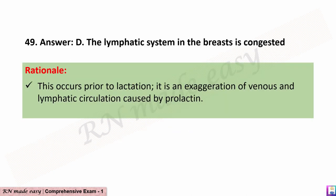The correct answer is D: The lymphatic system in the breasts is congested. Rationale: This occurs prior to lactation; it is an exaggeration of venous and lymphatic circulation caused by prolactin.